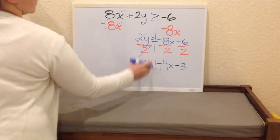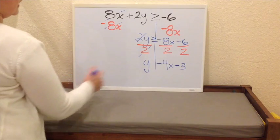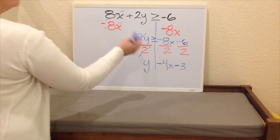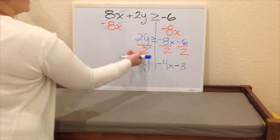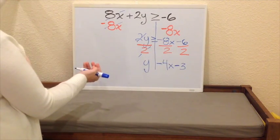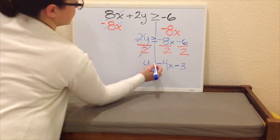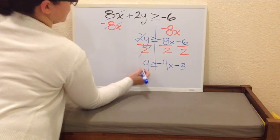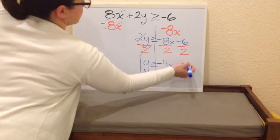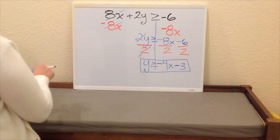And again, before we write our inequality symbol, we need to check. Have we done anything that will flip the inequality? We divided, but in this case it was a positive. So, no, we have not. It stays in this direction. So this is our linear inequality.